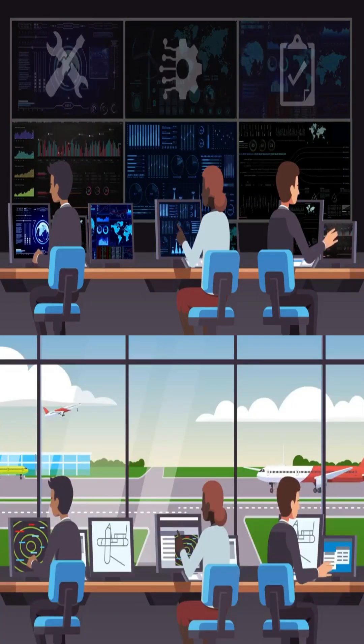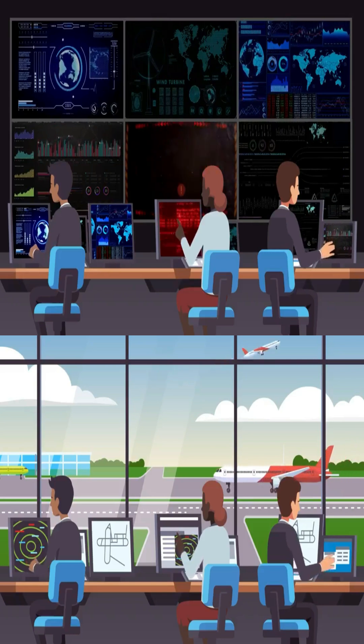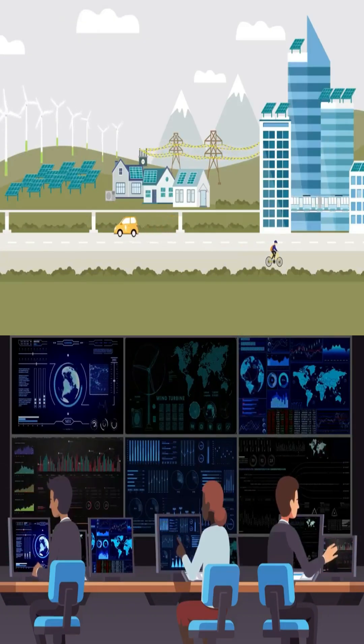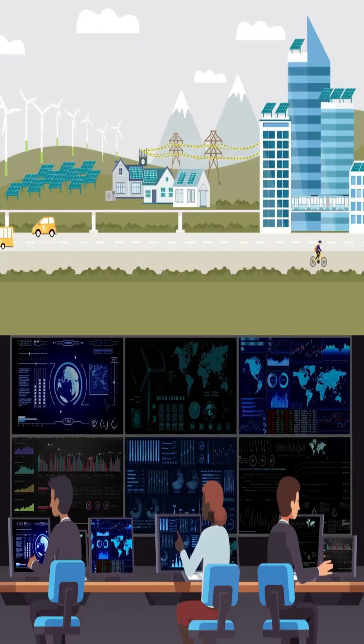The same way air traffic controllers direct millions of flights every day, power system operators direct thousands of gigawatts of electricity to billions of consumers around the world.